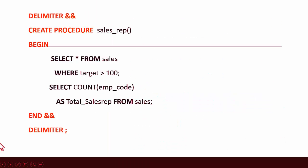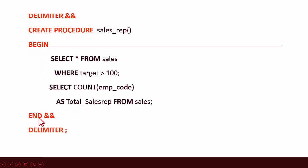Here is an example of a stored procedure in MySQL Workbench. The statements written with orange color are fixed statements. A stored procedure starts with DELIMITER and ends with END DELIMITER. The first section after the delimiter is the CREATE PROCEDURE statement, after which we give the name of the procedure — like 'sales_rep'. Then come two round brackets, and inside these brackets we give the list of parameters.